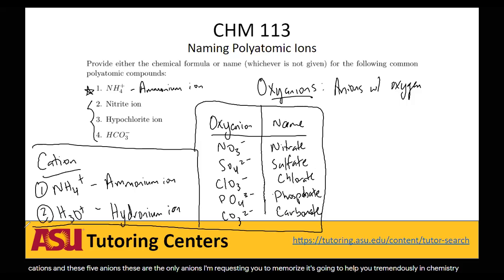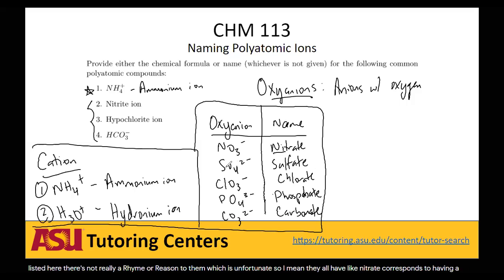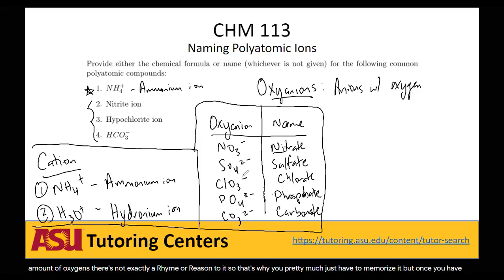All the ones listed here don't have a strict rhyme or reason to them, which is unfortunate. Nitrate corresponds to nitrogen, sulfate to sulfur, chlorate to chlorine — that's where the naming comes from. But when it comes to the charges and the number of oxygens, there's not exactly a rhyme or reason, so you pretty much just have to memorize them. But once you have these, there are some extra rules.